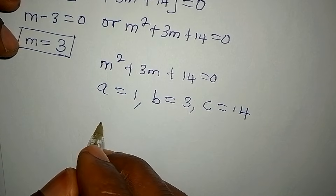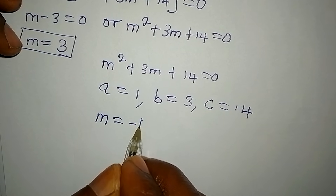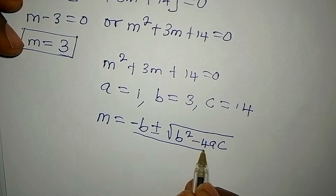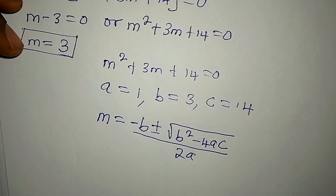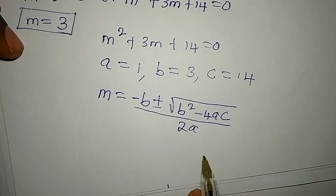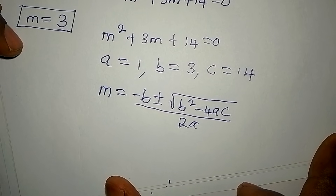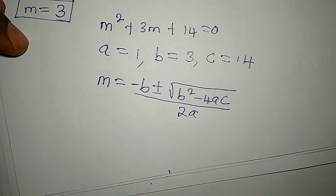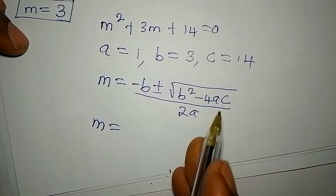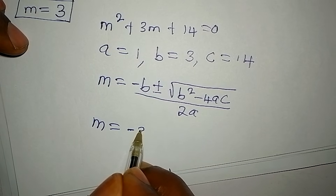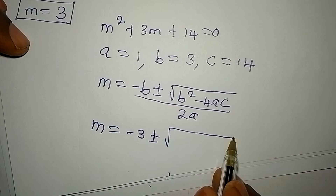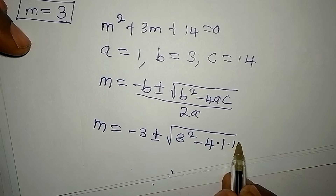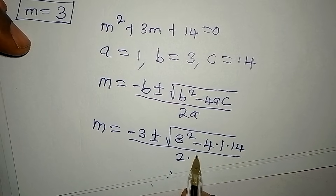The formula is m = (−b ± √(b² − 4ac)) / 2a. This is what we call the quadratic general formula — some call it the almighty formula, but I prefer quadratic general formula because there's no quadratic equation it cannot solve. Substituting: b = 3, so we have m = (−3 ± √(3² − 4×1×14)) / (2×1).